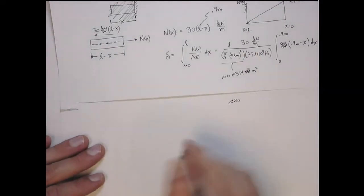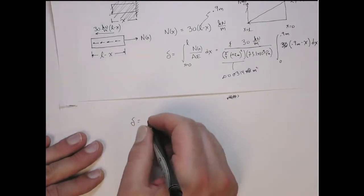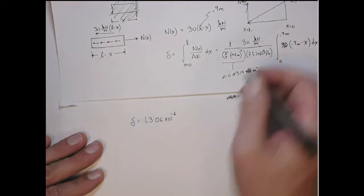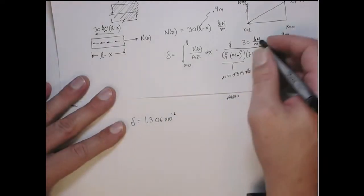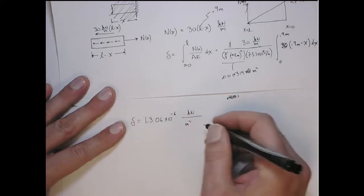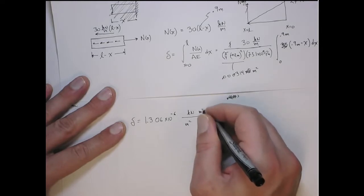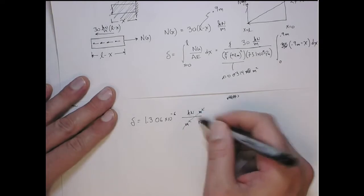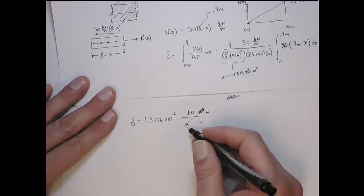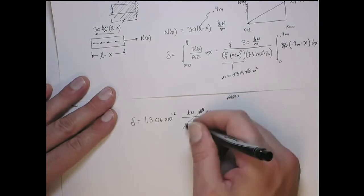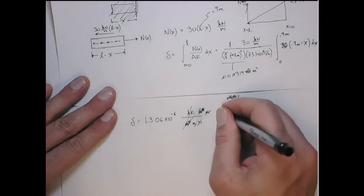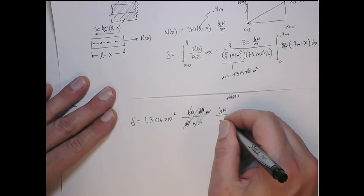So this gives me out front delta equals 1.306 times 10 to the minus sixth. And now the units of that are going to be - I've got kilonewtons on top of meters squared, and then I've got newton meters squared, so the meters squared cancel out. I get 1,000 here, the newtons cancel out. This is a meter, so I keep a meter on top. Wait, I keep a meter on the bottom, because I have a meter squared on the bottom.